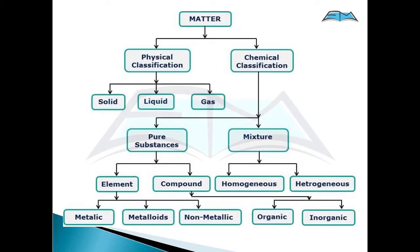Matter may be classified into two categories: physical classification and chemical classification. Physical classification tells about the physical nature of matter, whereas chemical classification tells about the chemical nature of matter — how it is made up.